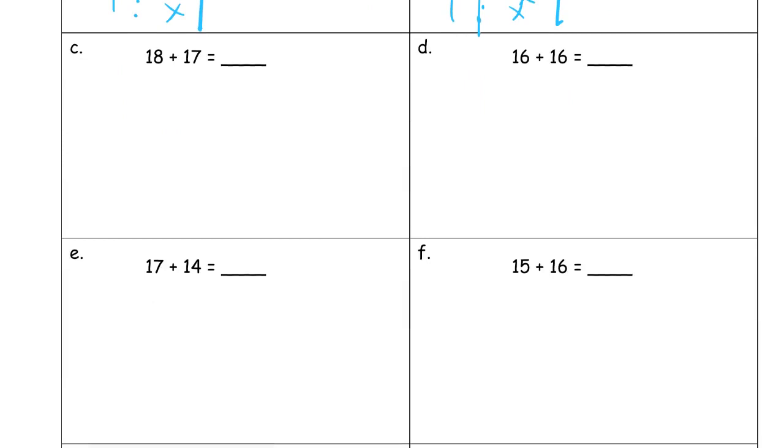18 plus 17. Now I'm going to go back to the number bond strategy because now 18 is 2 away from 20. So I'm looking at 2 and 2 less than 17 is 15. So, that's 20 and then 20 plus the 15, 35.